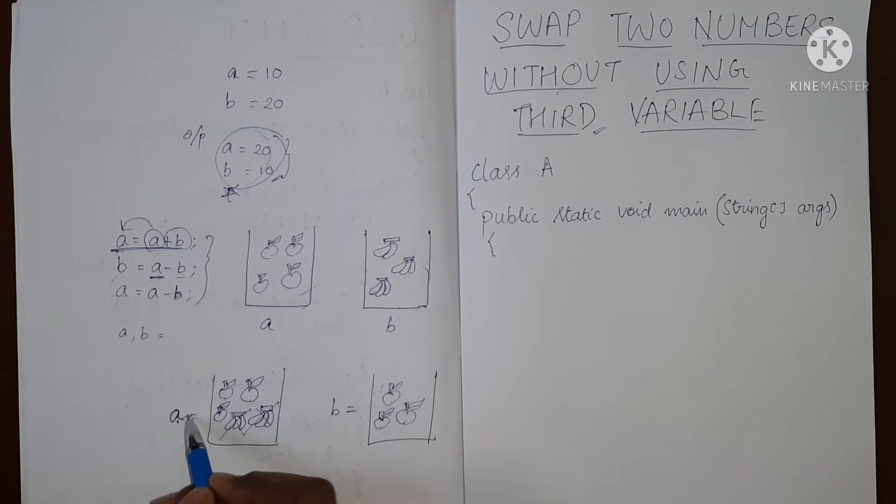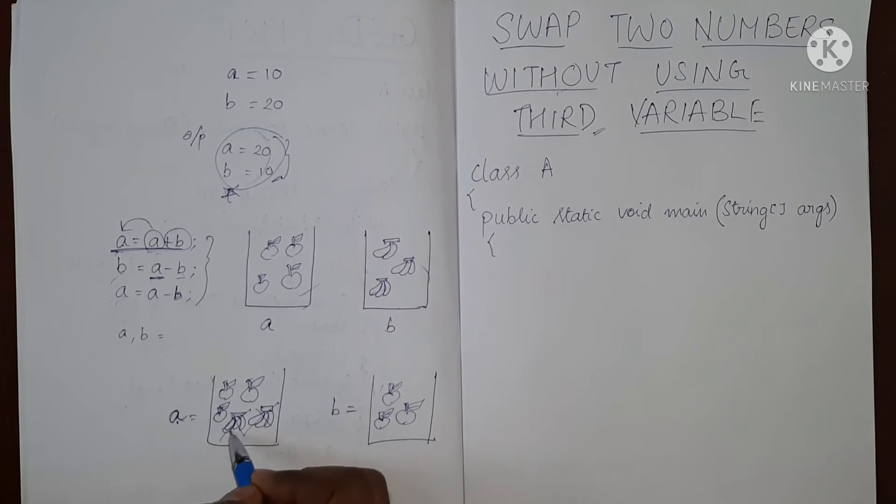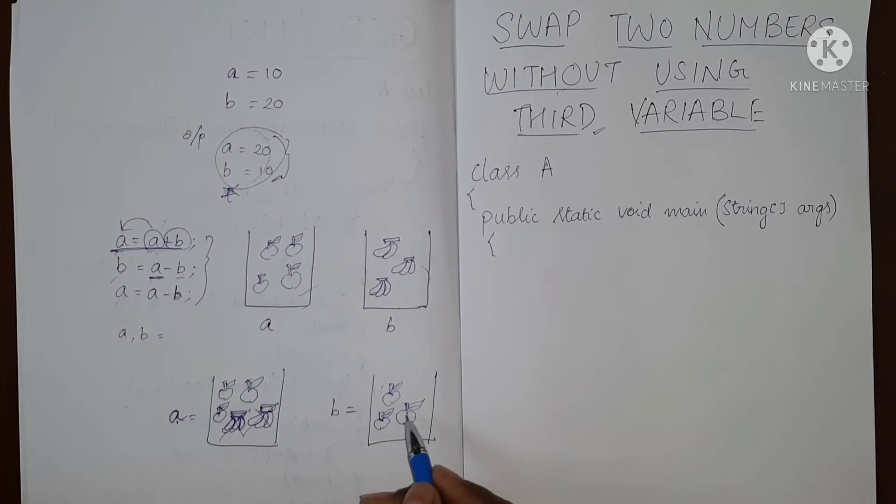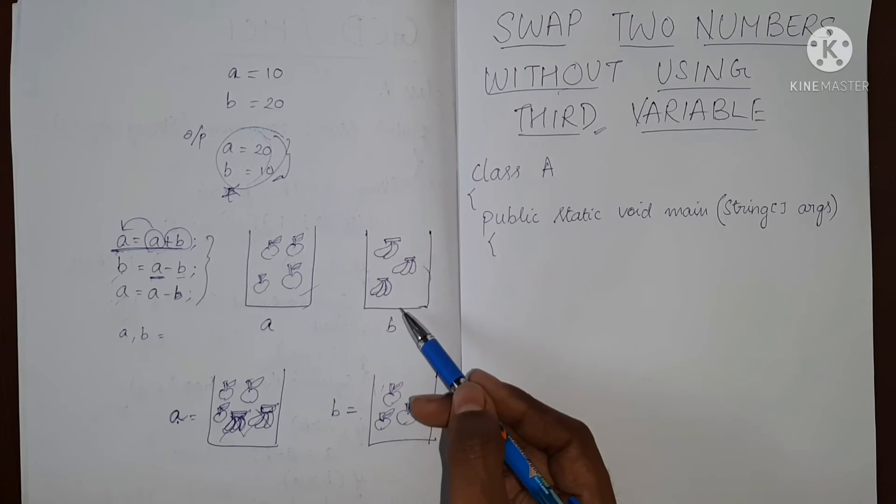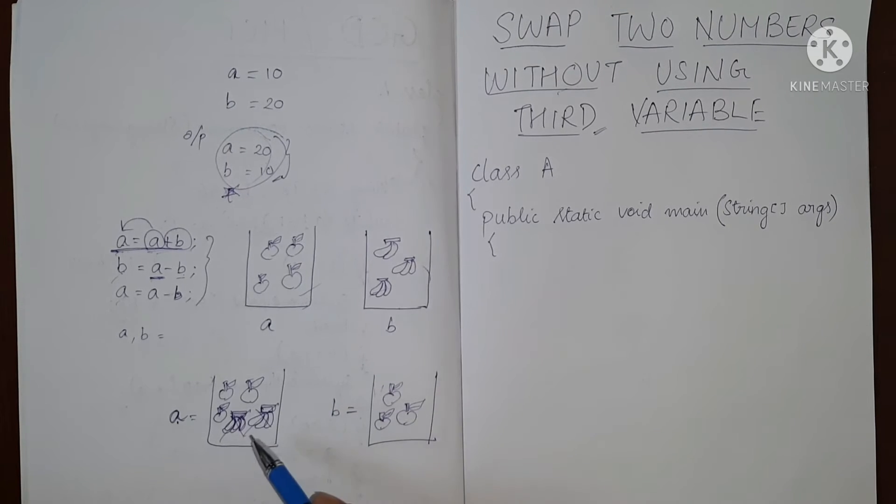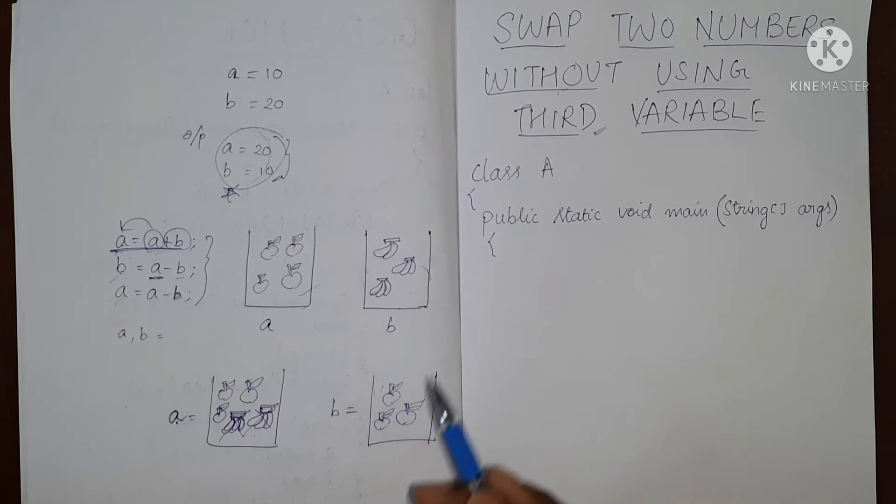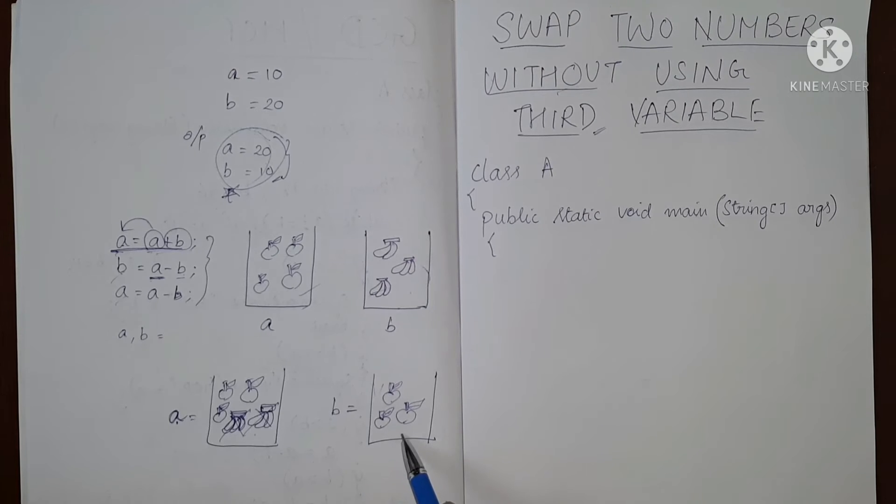So our a is a mixture of both apples and bananas. From that mixture, we have removed b, which was bananas. So from this mixture, we removed bananas. We got a container full of apples.